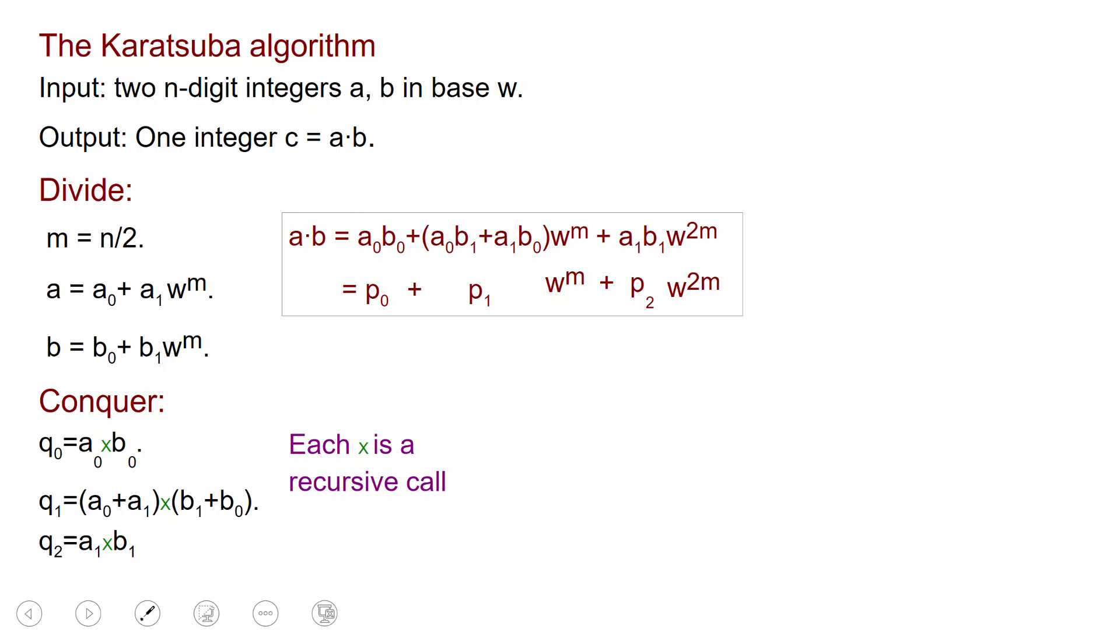We are going to conquer. We are going to perform the multiplication that we saw before. Q0 will be A0 times B0. Now A0 and B0 are numbers with n over 2 digits. I want to multiply them, so I am going to recursively call the Karatsuba algorithm on them. Similarly, I am going to call the Karatsuba algorithm recursively on Q1 to obtain A0 plus A1 times B1 plus B0, and same for Q2. And now I need to combine these solutions. As we saw earlier, the combine step is: P0 is given by Q0, P1 is Q1 minus Q0 minus Q2, and P2 is just Q2. And that's the description of the algorithm.